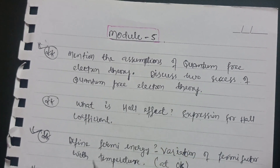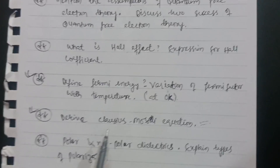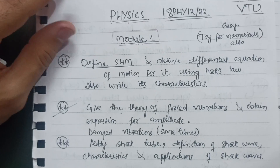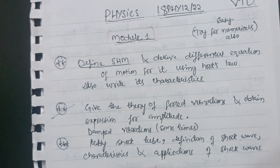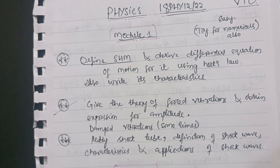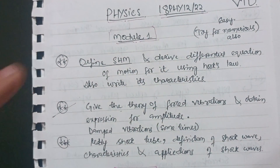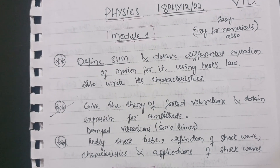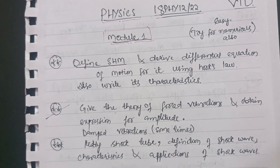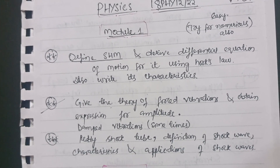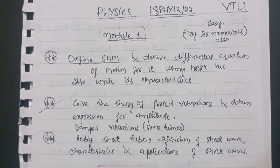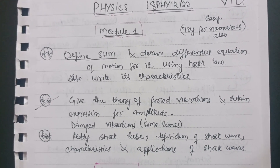This completes the entire engineering physics subject. If you prepare this much content, backlog students can easily pass and regular students can score 70 to 80 marks, even without focusing heavily on the numerical parts. I hope this video is beneficial for you. If you find it helpful, please share it and subscribe to my channel so I can make more content for you.